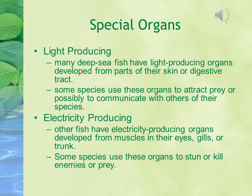Other special functions include light-producing and electricity-producing organs. Many deep-sea fish have light-producing organs derived from part of their skin or digestive tract. Some species use these organs to attract prey or to communicate with others of their species. Electricity-producing organs develop from muscles in their eyes, gills, or trunk. Some species use these organs to stun or kill enemies or prey.